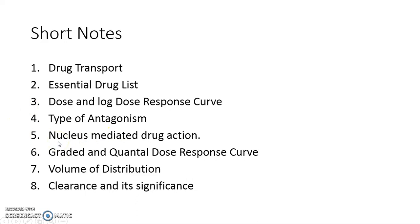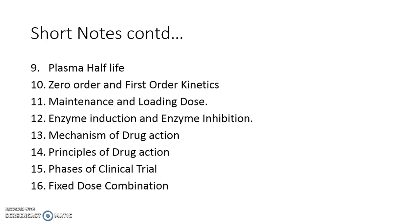Question five is nucleus-mediated drug action — what is this particular type of drug action and what is its mechanism? Question six is graded and quantum dose-response curves — these are types of dose-response curves and can come as individual topics. Question seven is volume of distribution, or apparent volume of distribution, which is also a very frequent question. Question eight is clearance and its significance. Question nine is plasma half-life. Question ten is zero order kinetics and first order kinetics — these can also come as individual topics. Question eleven is maintenance dose and loading dose — their significance, suitable examples, and the conditions in which these doses are given.